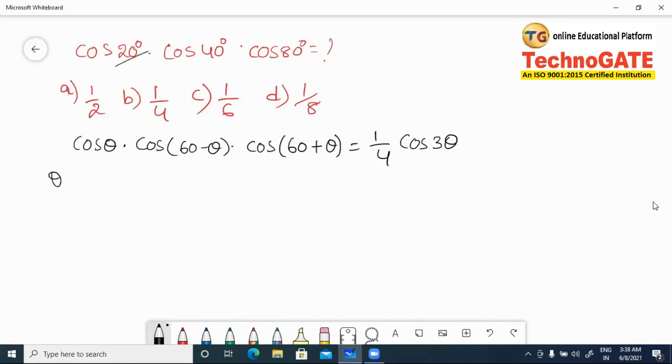So θ = 20°. Substituting: cos 20° × cos(60° - 20°) × cos(60° + 20°). That's what we have: cos 20°, cos 40°, and cos 80°.